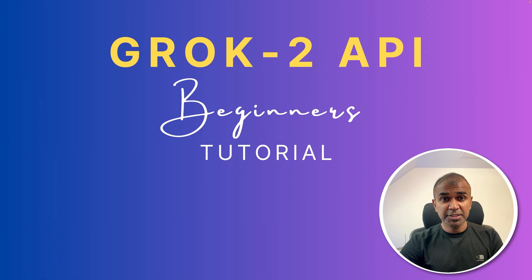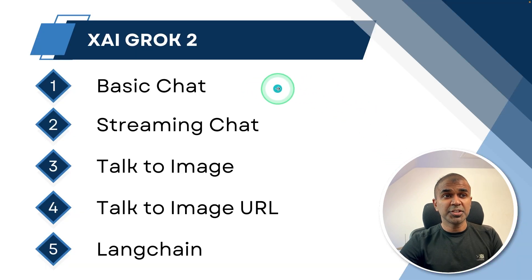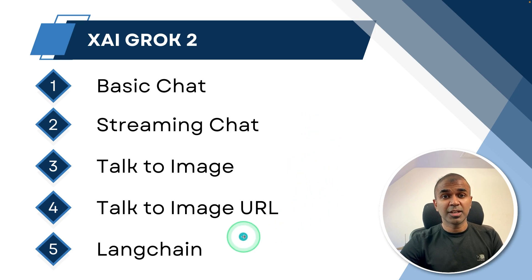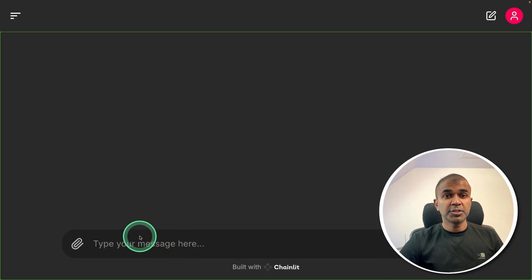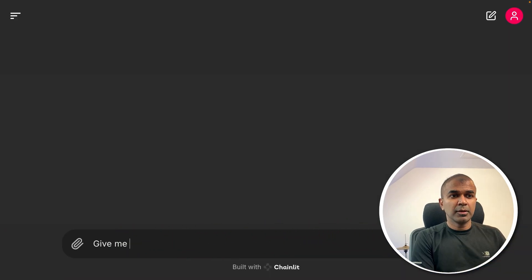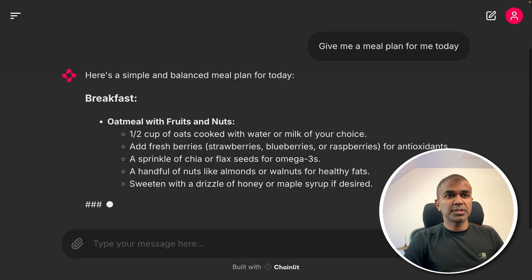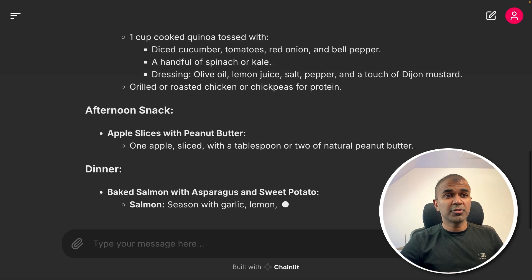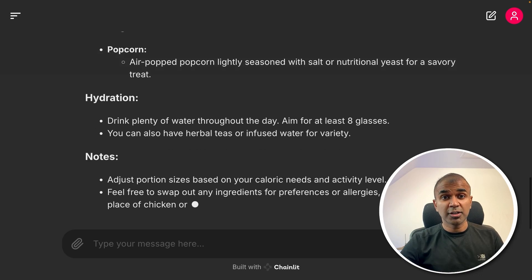I'm going to take you through step by step how you can use the Grok2 API: have a basic chat, set up a streaming chat, talk to image, talk to image URL, and how you can use LangChain with XAI Grok2. I'm also going to teach you how to create a user interface, which looks like this — you can ask 'give me a meal plan for me today' and you can see the response is super fast, quickly generating the response.